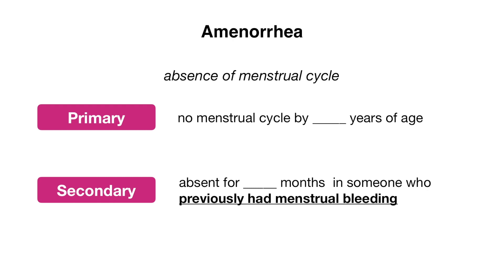Let's discuss amenorrhea, which is the absence of a menstrual cycle, and there are two forms. Primary amenorrhea is when there is no menstrual cycle by the age of 15. Secondary amenorrhea is when there is an absence of a menstrual cycle for six months in someone who previously had menstrual bleeding.